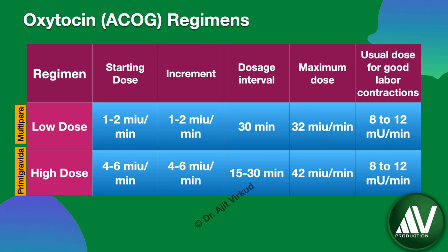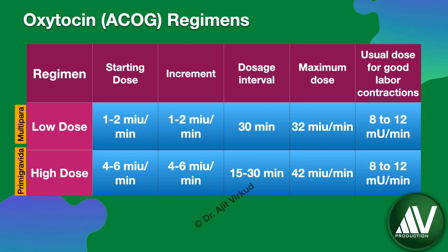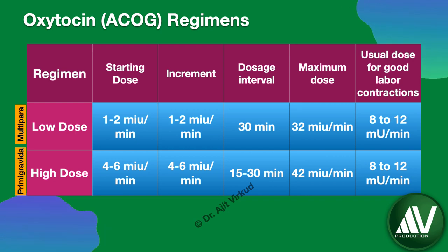Once adequate response is achieved, further increase is stopped and the dose may be reduced. This is because the dose required for initiating uterine contractions is more than that required for maintaining them. Hence, once the cervix is greater than 5 cm dilated, the dose can be decreased to 7 mU per minute. In some pumps, this is done automatically if the intrauterine pressure transducer shows hyperactivity.